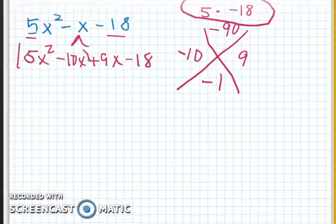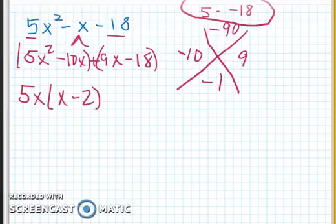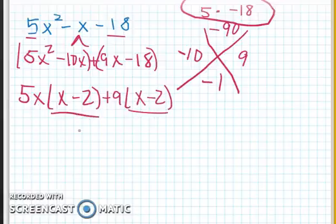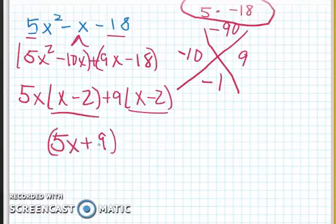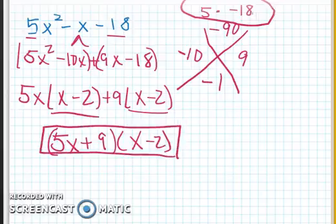We do the same thing. Factor by grouping. That's it. So we pull out a 5x. I'm left with x - 2. Over here I pull out a 9. I get x - 2. They look the same. And we get 5x + 9 and that x - 2. So again, the only thing that we're doing differently from before is we have to multiply the front to the back number.